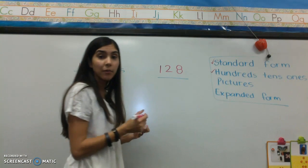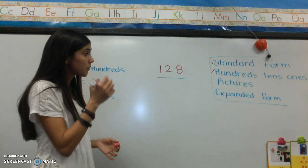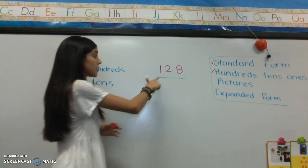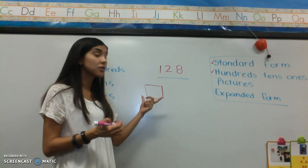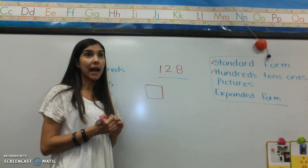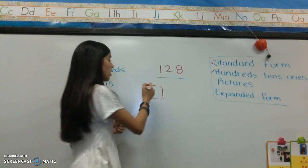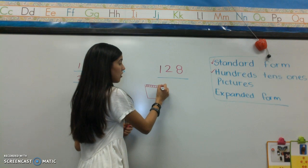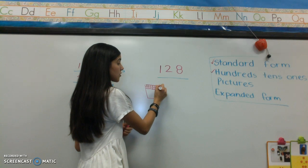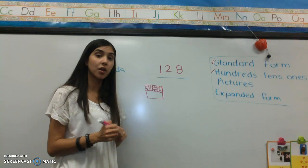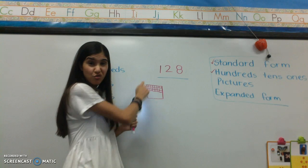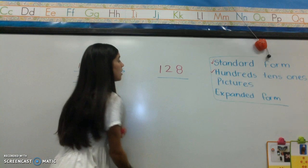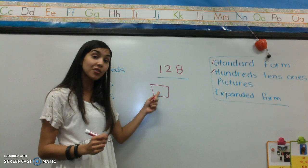Now I'm going to represent my number in pictures. If I wanted to represent 128 in pictures, first I'm going to focus on my one that's in the hundreds place. A hundred is represented by a big square like this. If you looked at other pictures of a hundred, a lot of times you might see that there are actually 100 little squares inside this big square. It would take us a really long time to draw a picture like that, so we're not going to do this. Know that the reason this big square represents 100 is because you have to imagine there are a hundred really tiny squares in this big one, but that takes way too long, so we just draw one big square.